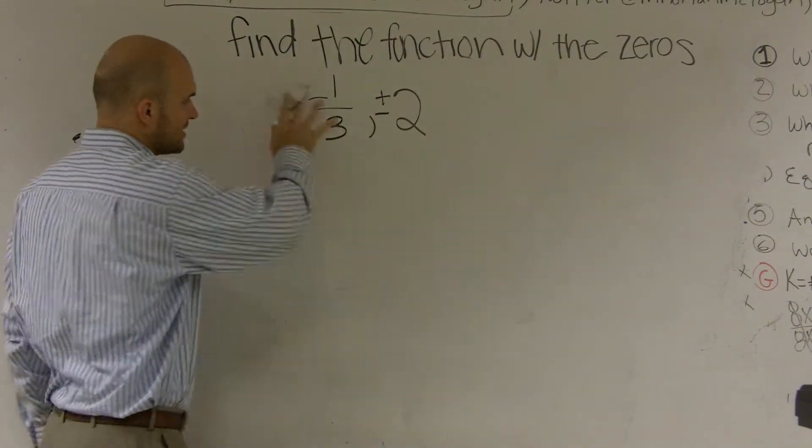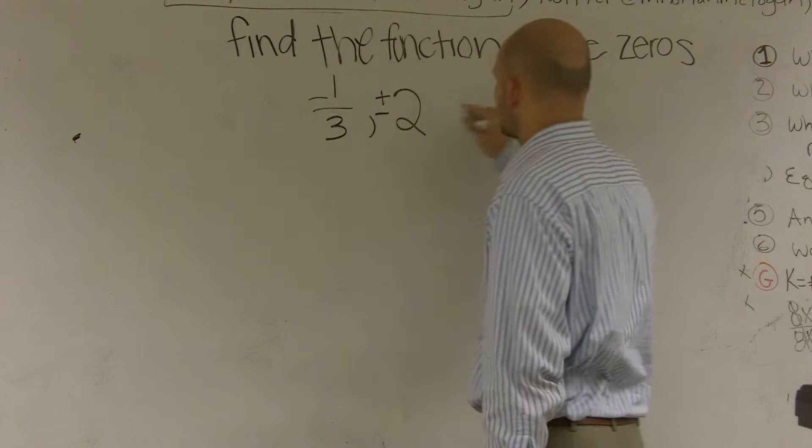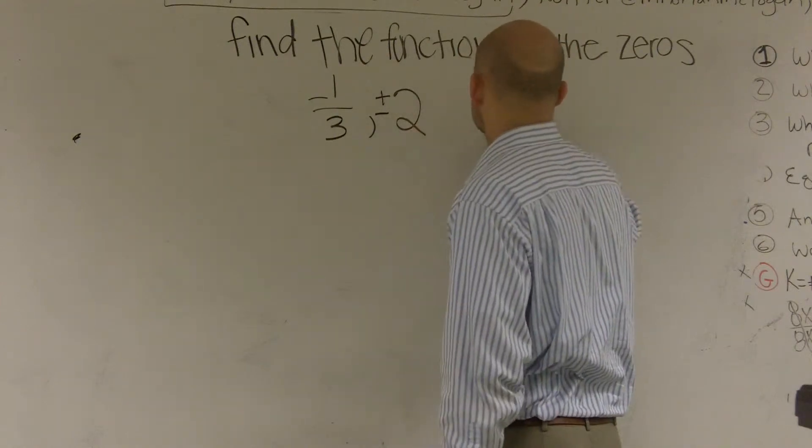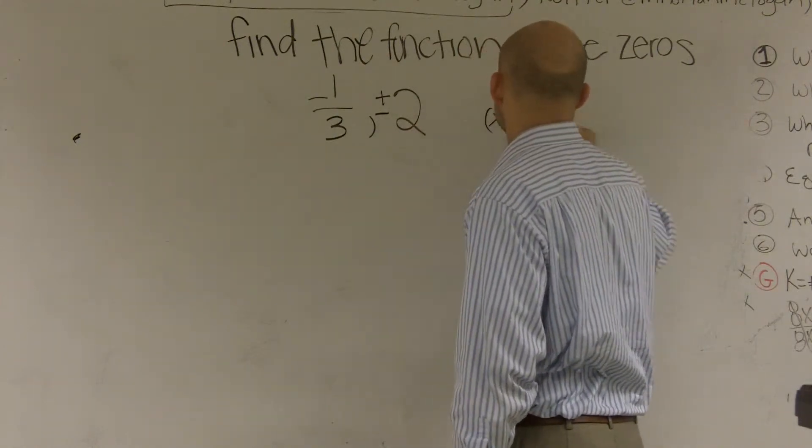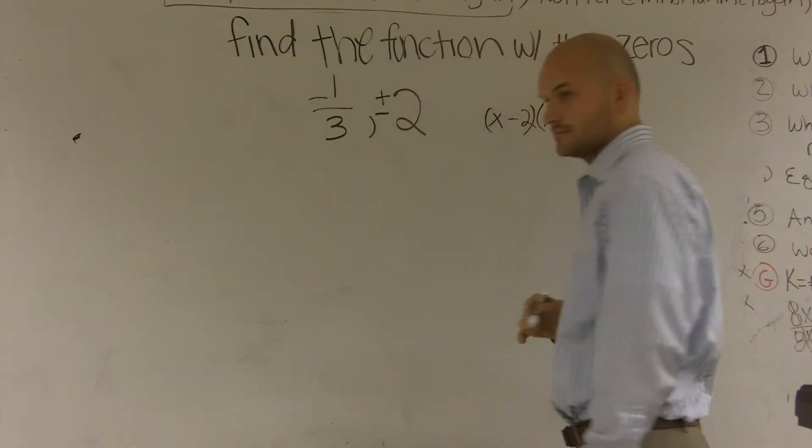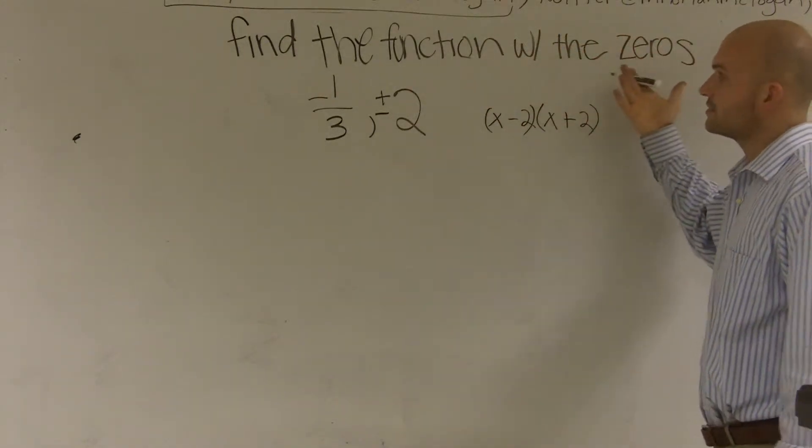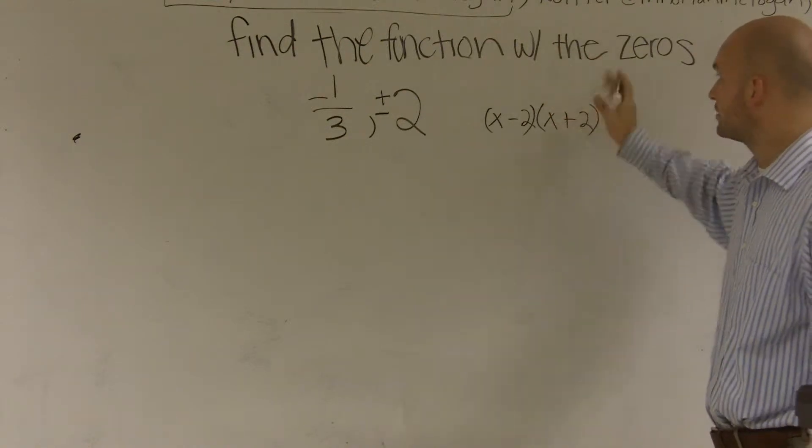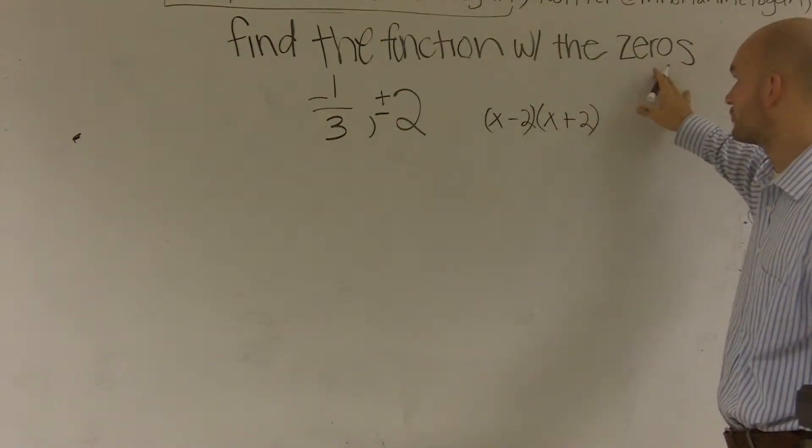So I'm not going to worry about the negative one-third right now. I'm just going to write these two as factors. x minus two, x plus two, right? So since they have zeros, they said find the function, the polynomial with the zeros. And this is going to be a third degree.